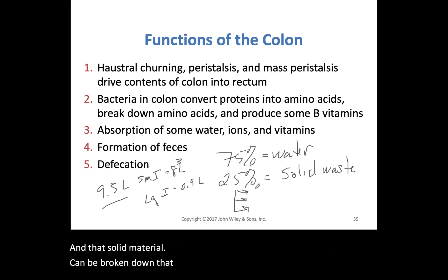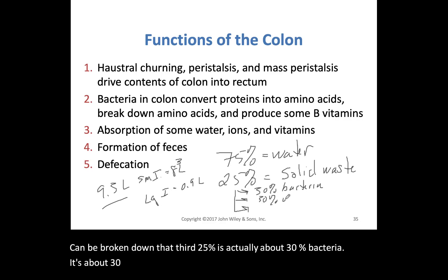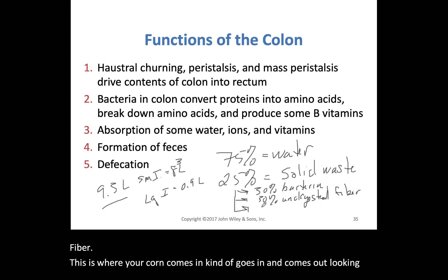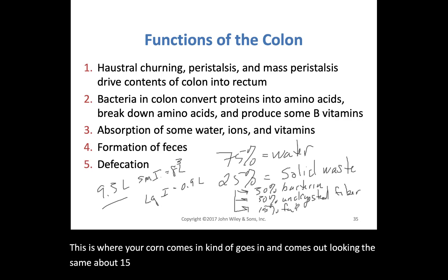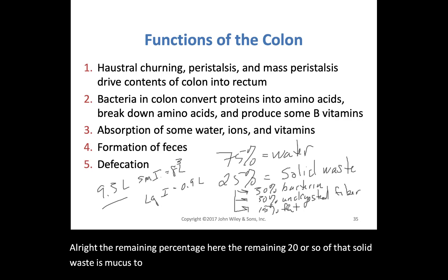That 25 percent of solid material can be broken down further: about 30 percent of it is bacteria, about 30 percent is undigested fiber — this is where your corn kind of goes in and comes out looking the same — about 15 percent fat, and the remaining approximately 20 percent is mucus, proteins, and epithelia that has been sloughed off throughout the process.